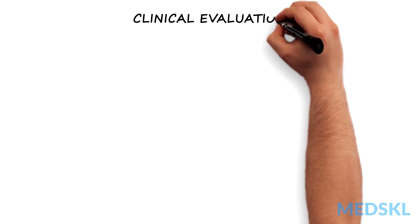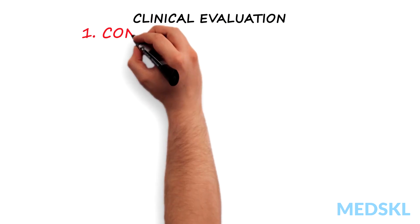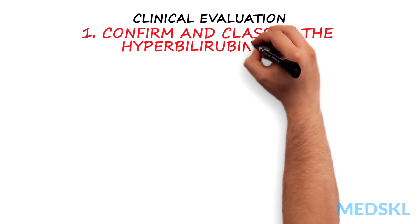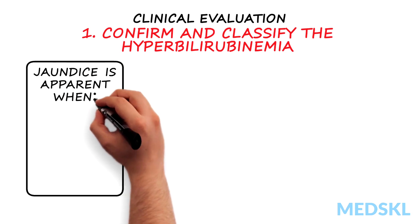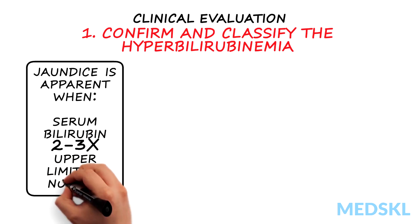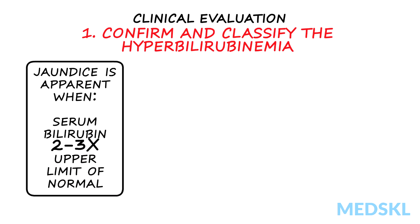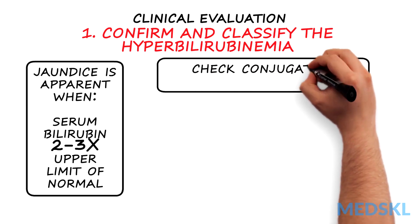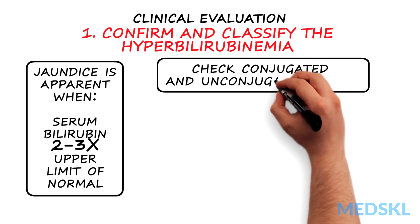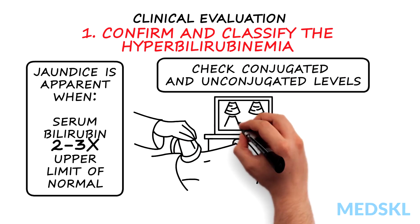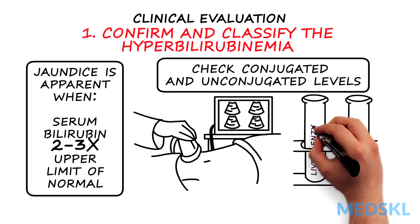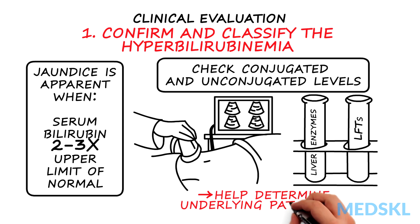The clinical evaluation of jaundice requires a step-wise approach. First, confirm and classify the hyperbilirubinemia. In general, jaundice doesn't become apparent until the serum bilirubin levels are 2-3 times the upper limit of normal, usually greater than 50 micromoles per liter or 3 mg per deciliter. When checking bilirubin levels, it's important to also check for conjugated (direct) and unconjugated (indirect) bilirubin levels. This, along with the results of the abdominal ultrasound, liver enzymes and liver function tests, will help you determine the underlying pathology.